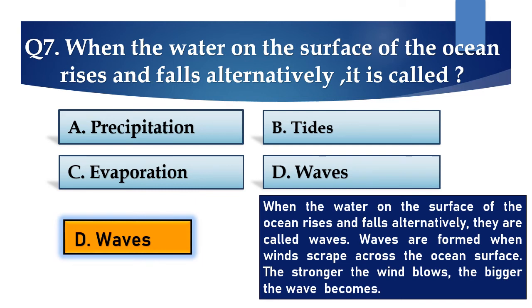The answer is D. Waves. The waves are formed when the winds scrape across the ocean surface. The stronger the wind blows, the bigger the wave becomes.